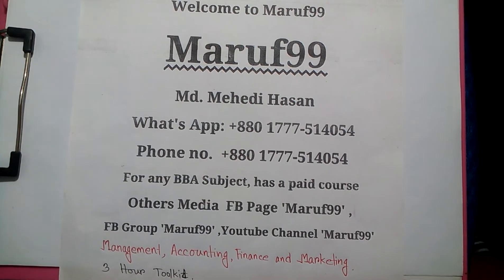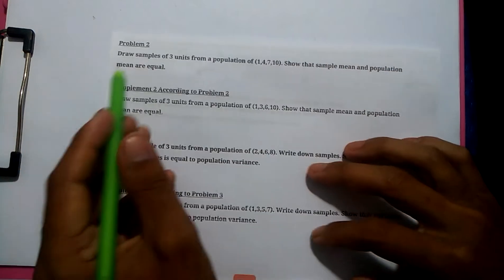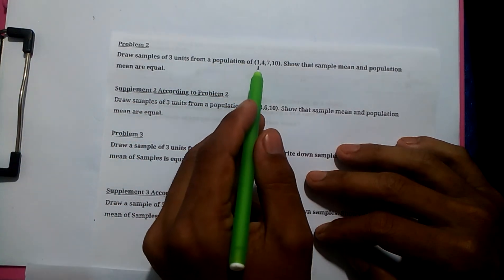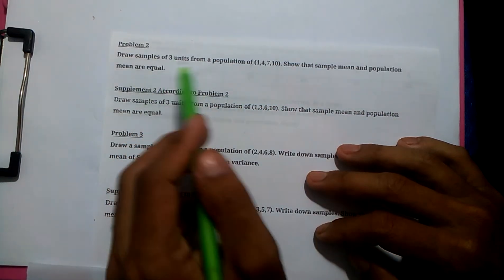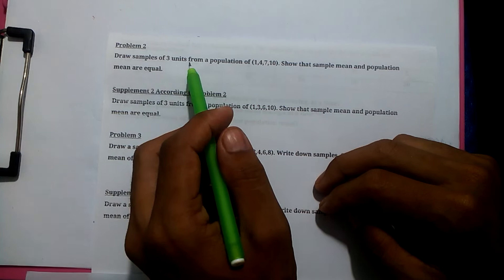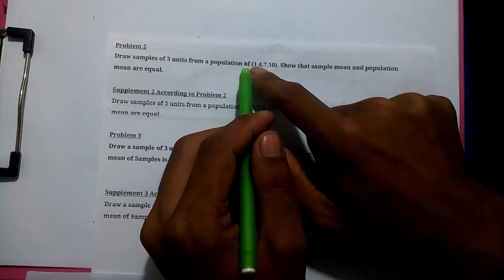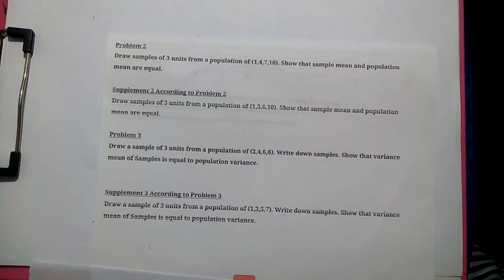Welcome back to MARS 2019. Today we're covering sampling and sampling distribution. The procedure is clear: draw a sample of three units from a population of 1, 4, 7, 10 so that the sample mean and population mean are equal. We'll work through this problem step by step.